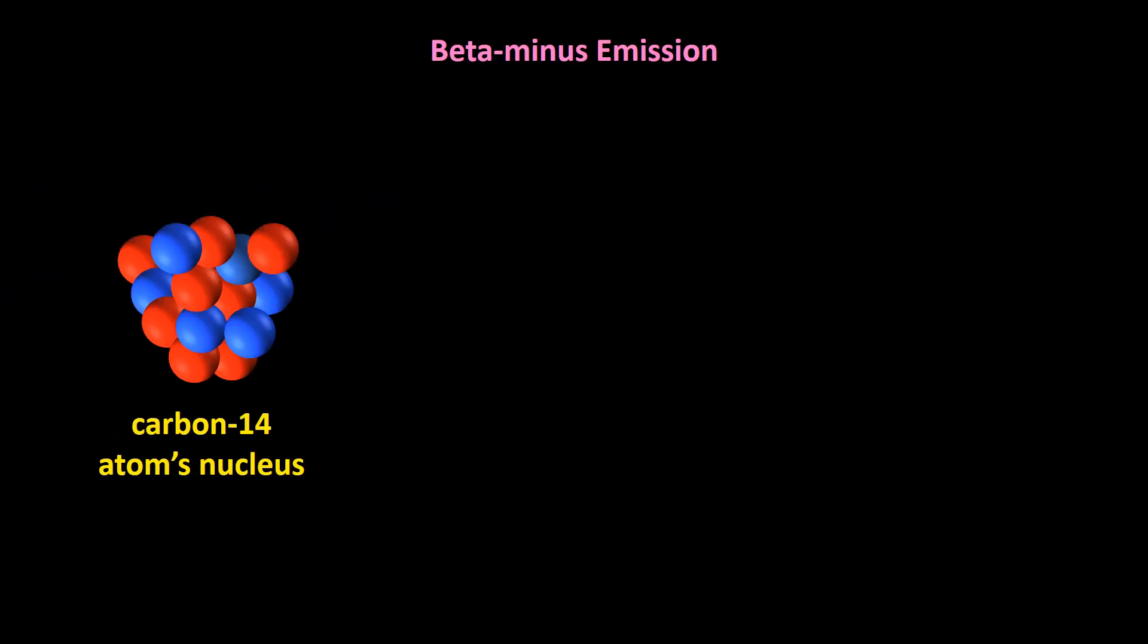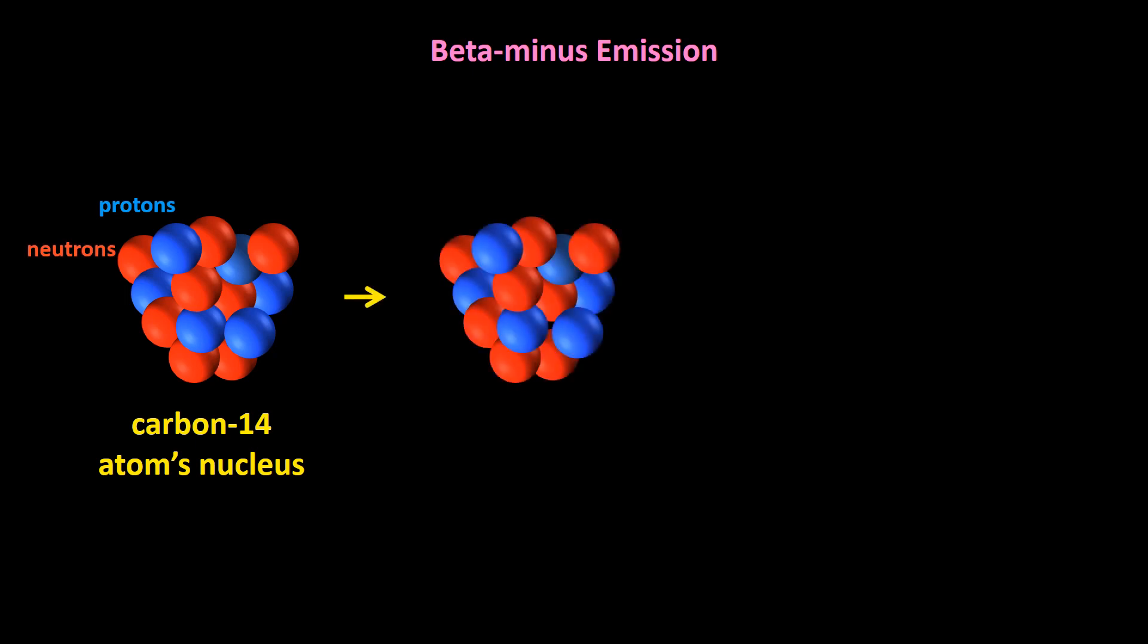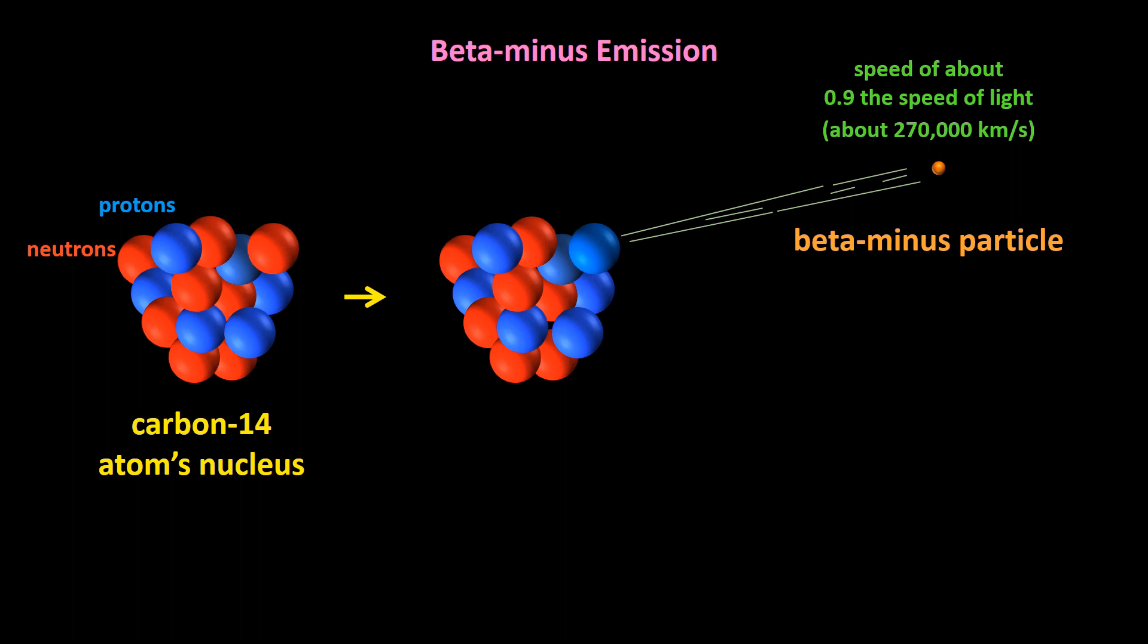Let me show you a close-up of a carbon-14 atom's nucleus with protons in blue and neutrons in red, duplicate it, and examine what happens when it decays. In beta minus decay, one of the neutrons turns into a proton and an electron. The electron is emitted from the nucleus at a speed of about 0.9 the speed of light, about 270,000 kilometers per second, which is extremely fast of course, and it is called a beta minus particle.